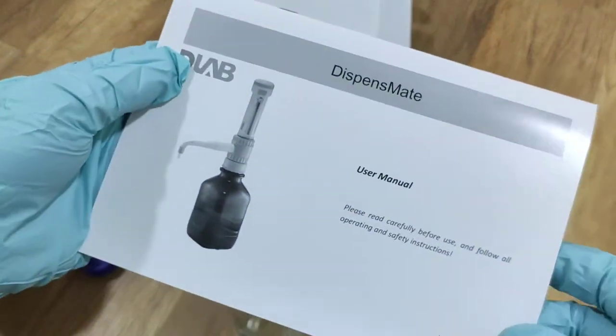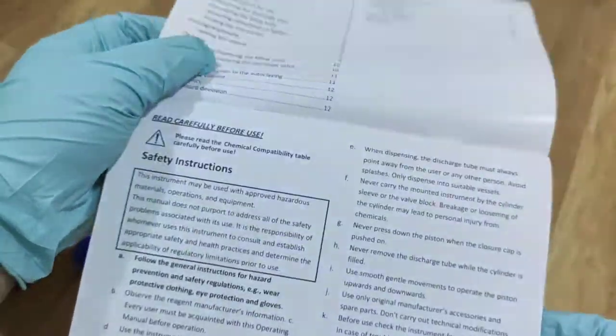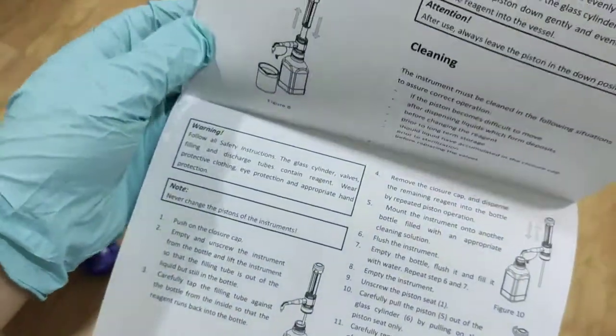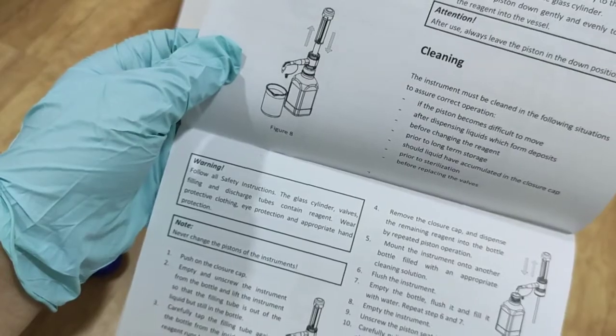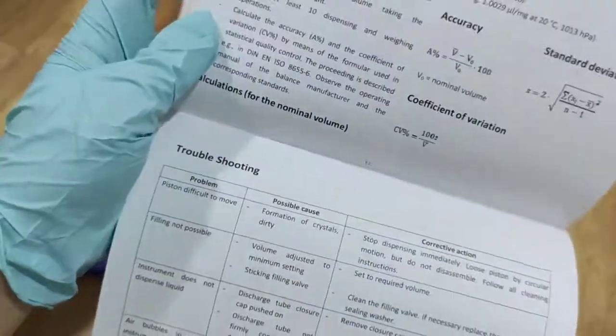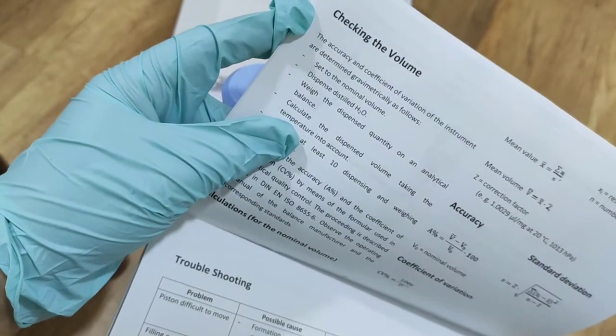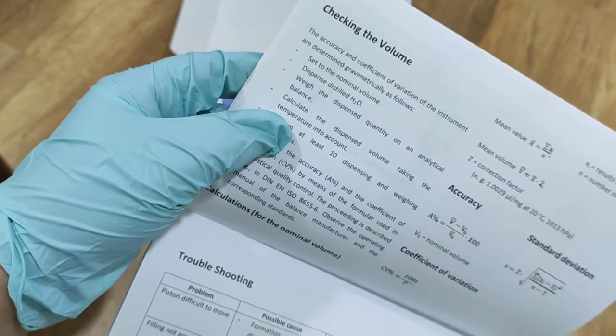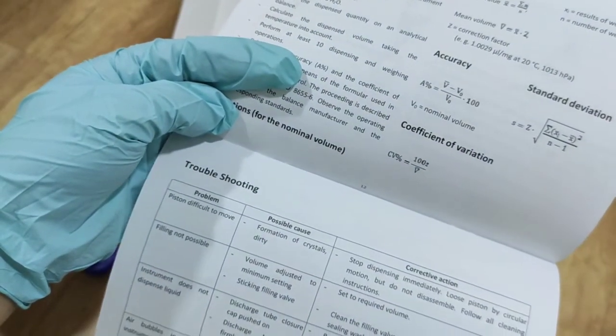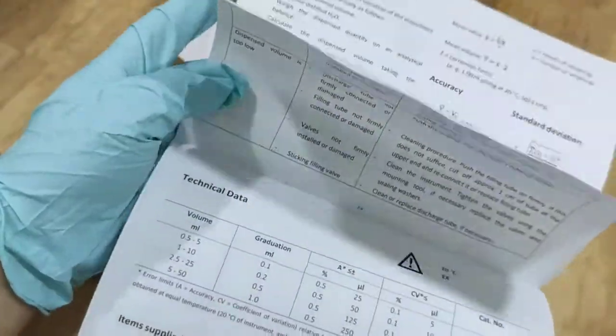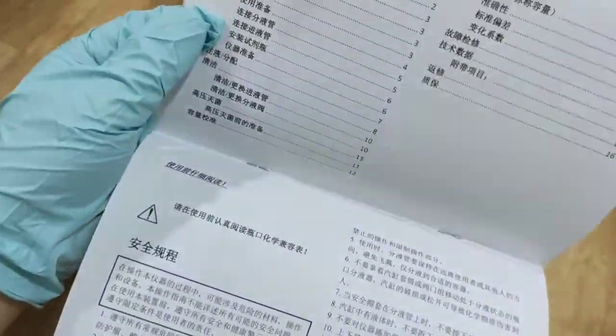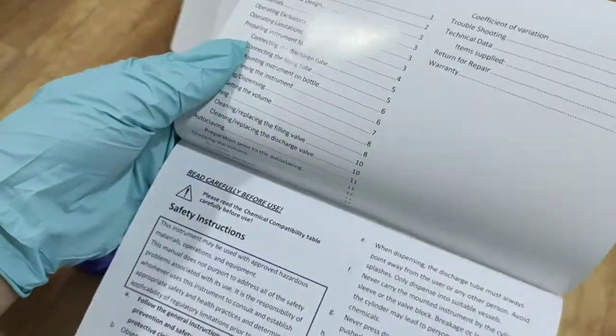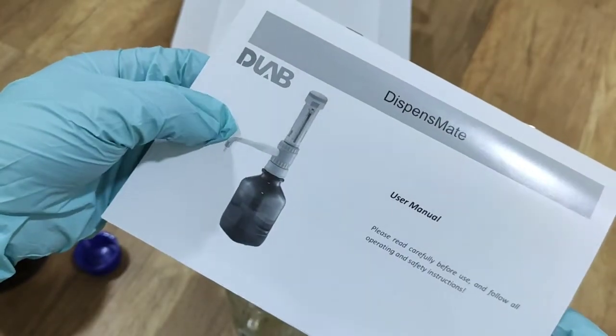And here, this is the user manual. There's many, many details we can learn from it. Just now what I showed is the basic use. There's some of the calibration, volume checking, to calculate the accuracy, standard deviation, troubleshooting, and some other technical things. All explained in this manual. So before you start to manipulate, you should read it clearly, carefully.